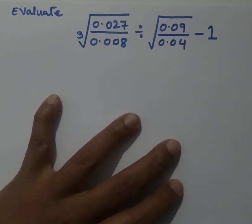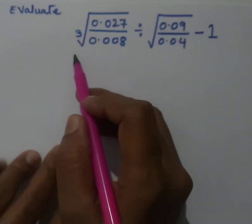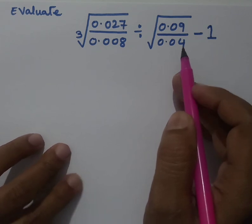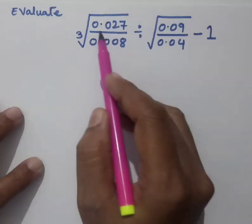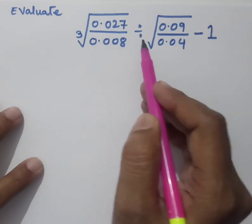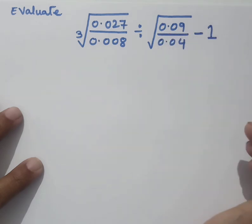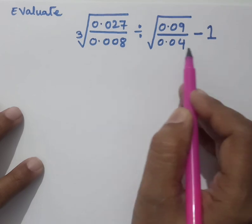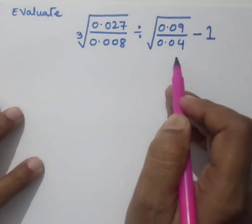Dear students, this is a question which involves both cube root and square root. This question is often asked in the examination of standard 8. Let us see how we can solve it. The question is: cube root of 0.027 by 0.008 divided by square root of 0.09 by 0.04 minus 1. You have to pay attention that this question involves both cube root and square root, so you should keep in mind both the rules required here.